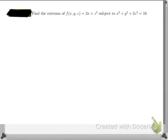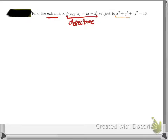Lagrange multipliers, part two — same kind of idea. We're trying to find the extrema, so our maximum and minimum values of some function. This function would be our objective — what we're trying to find the maximum or minimum of — and then subject to a constraint, which is this equation right here.